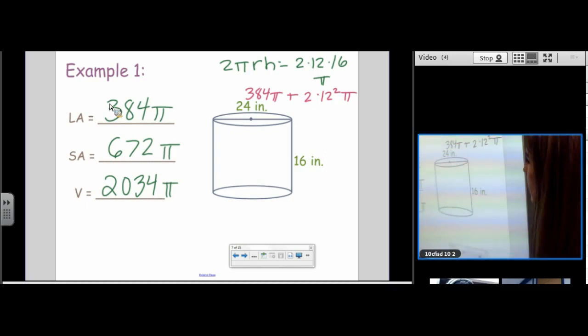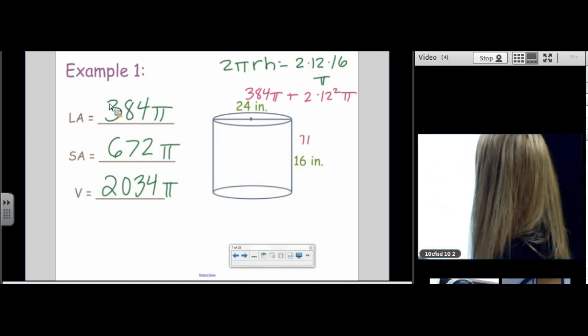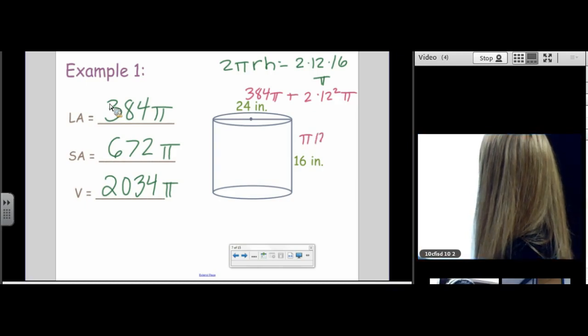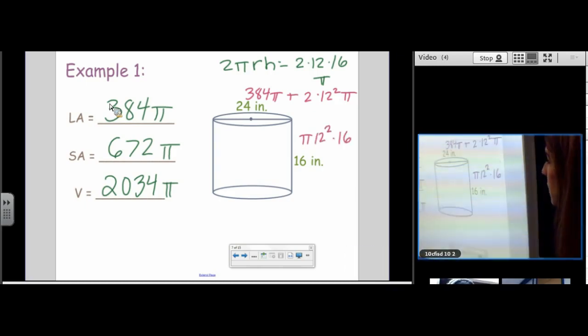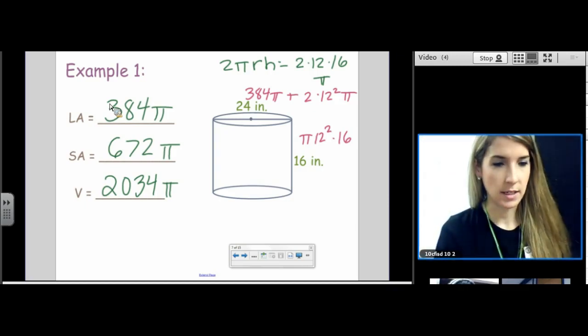And then finally, volume, base times height. πr² times the height. So really basic, really straightforward, 144 times 16, and we are in business.